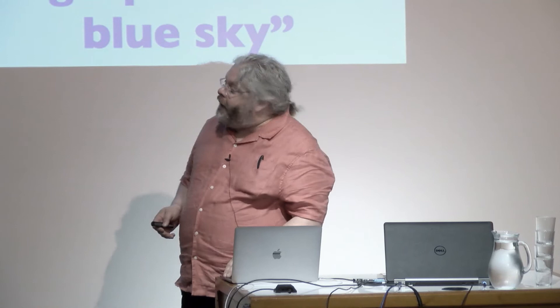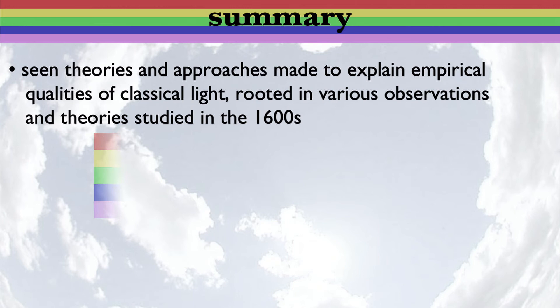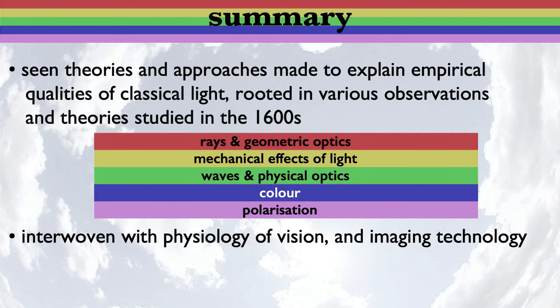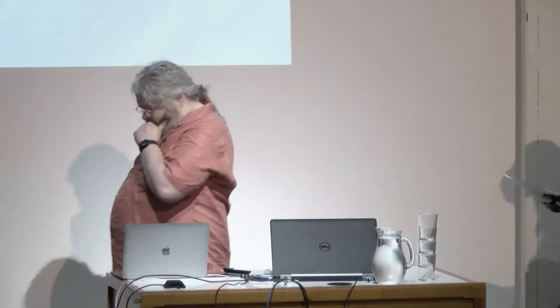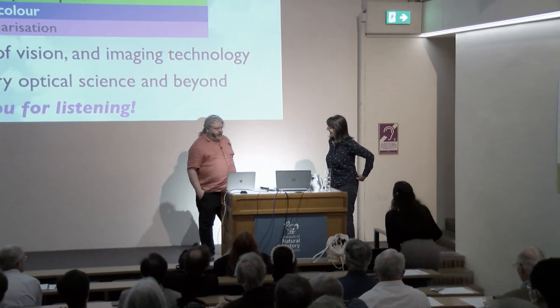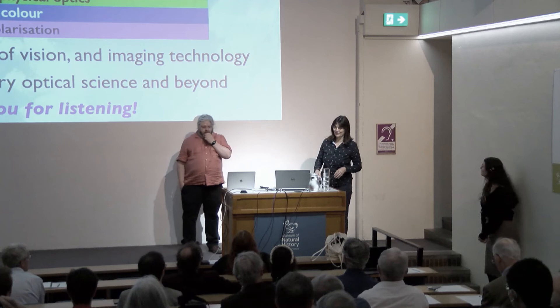There can always be features of the classical world — or beyond it — out there if you know how to look. We've seen various theories and approaches made to explain the empirical qualities of classical light, rooted in the 1600s: rays, mechanical effects, waves, colour, and polarisation — interwoven with the physiology of vision and imaging technologies, with anticipations of contemporary optical science and beyond. Sorry for overrunning, and thank you for listening.